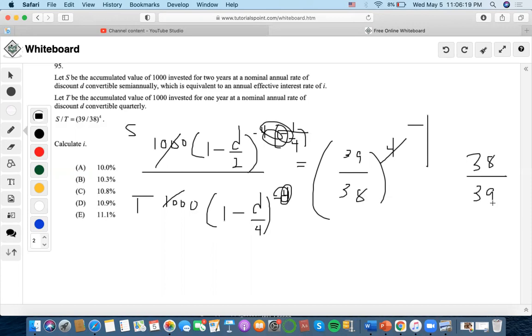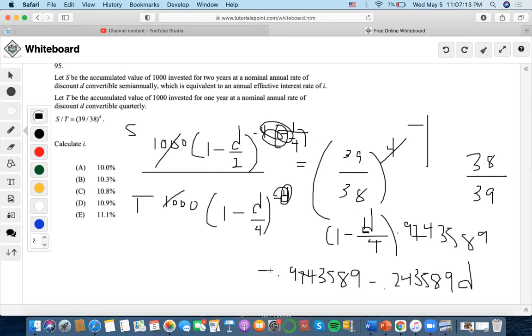We could also simplify it by doing 38 divided by 39 which is 0.9743589. Now we could multiply it by this amount. Now let's do 0.9743589 divided by four, which gives 0.243589.